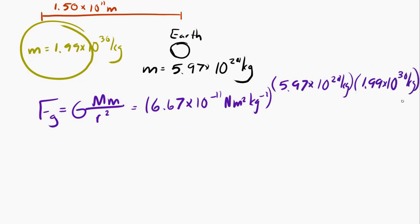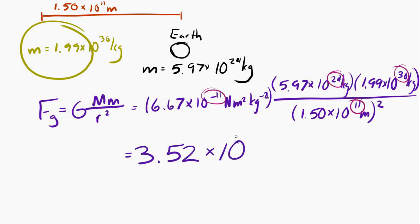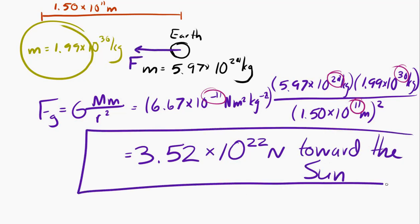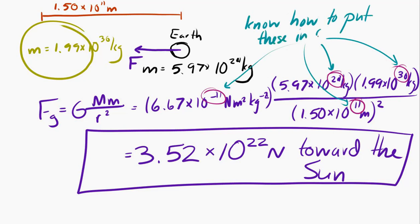If I have one piece of advice for you when you're doing these calculations, it's be careful with the exponents. The exponents are often the reason why people make errors in this kind of a question. If you're uncomfortable with entering exponents into your calculator, look up online. Usually there are very helpful YouTube videos that show you how to do it. If you don't remember how you did it in chemistry, you might want to review your chemistry notes. Or if you've done it in another math class, it might be helpful to look at those notes as well.